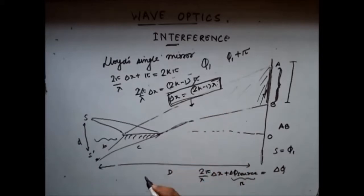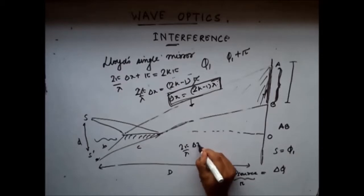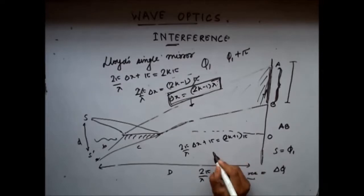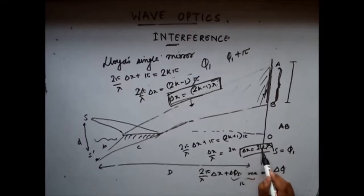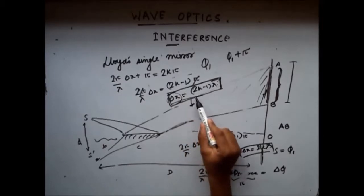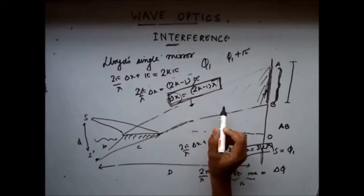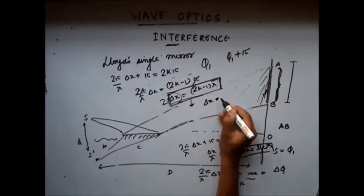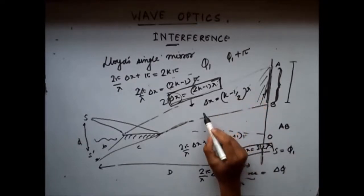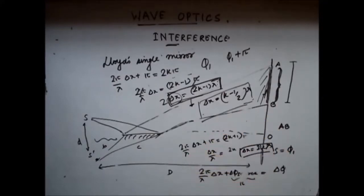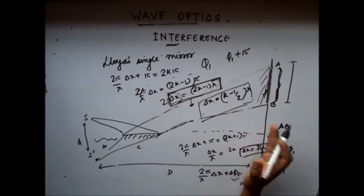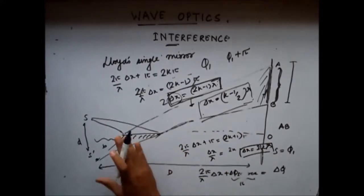For destructive interference, the phase difference should equal 2kπ, giving Δx = kλ. For constructive interference, Δx = (k − ½)λ, which is an odd integral multiple of λ/2. So the conditions for constructive and destructive interference are interchanged compared to Young's double slit experiment.